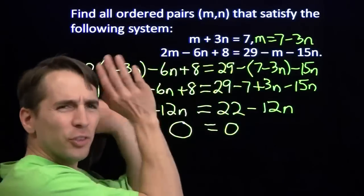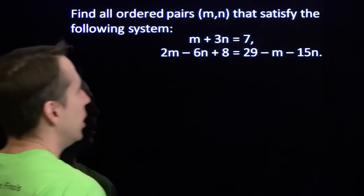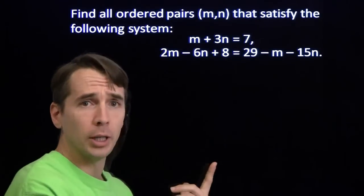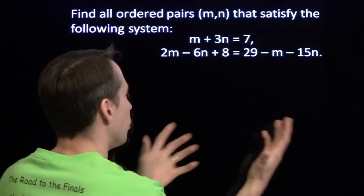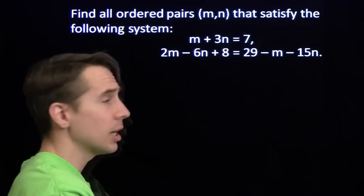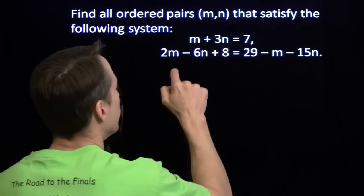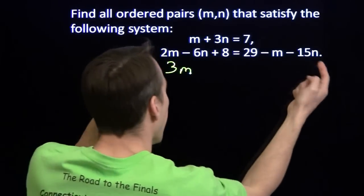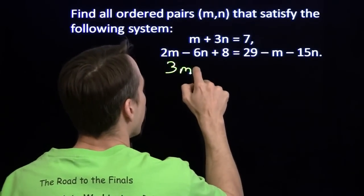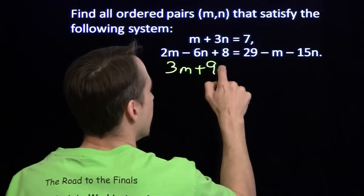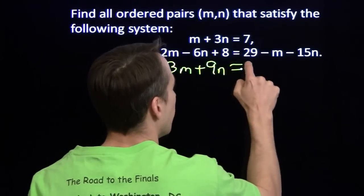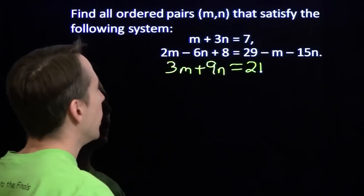Forget it. Let's forget substitution. I like elimination better anyway. Let's try elimination. We'll do what we should have done first. We'll get organized. We'll organize this second equation, bring all the variables over here, throw the constants over there. Add m to both sides, we'll have 3m. We'll add the 15n to both sides. Minus 6n plus 15n gives us plus 9n. We'll subtract the 8 from both sides. 29 minus 8 is 21.